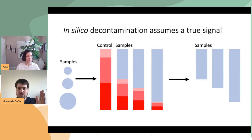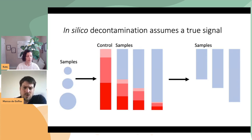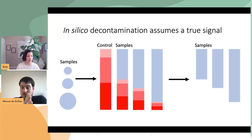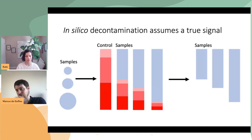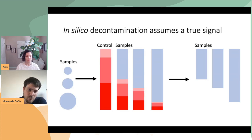Now, if you have reagent contamination and want to correct for it, most commonly people use negative controls and subtract them from their samples to figure out the genuine signal. This tends to work for low biomass samples because those actually contain a genuine signal — you can use negative controls, or even just look at the ratio of all your signals to figure out which are contaminants. Use both negative controls and statistical tricks to identify genuine signals versus reagent contamination signals.